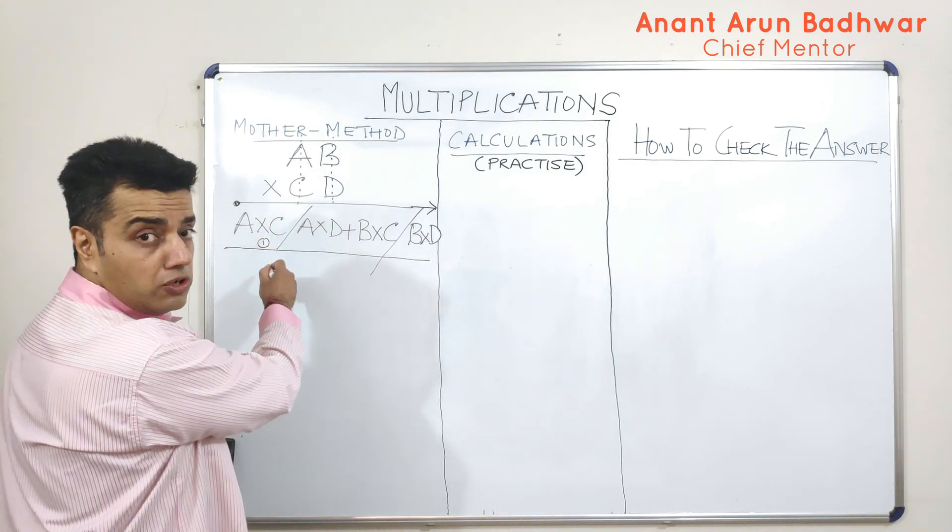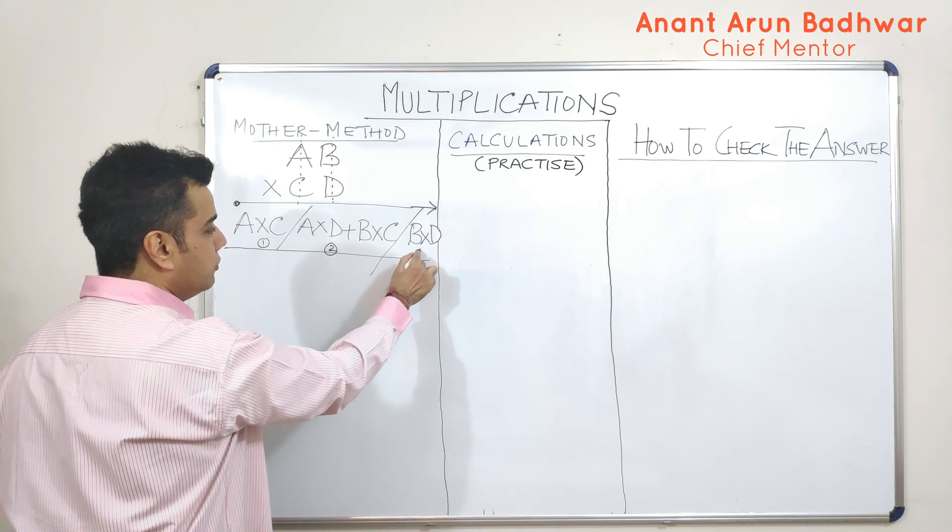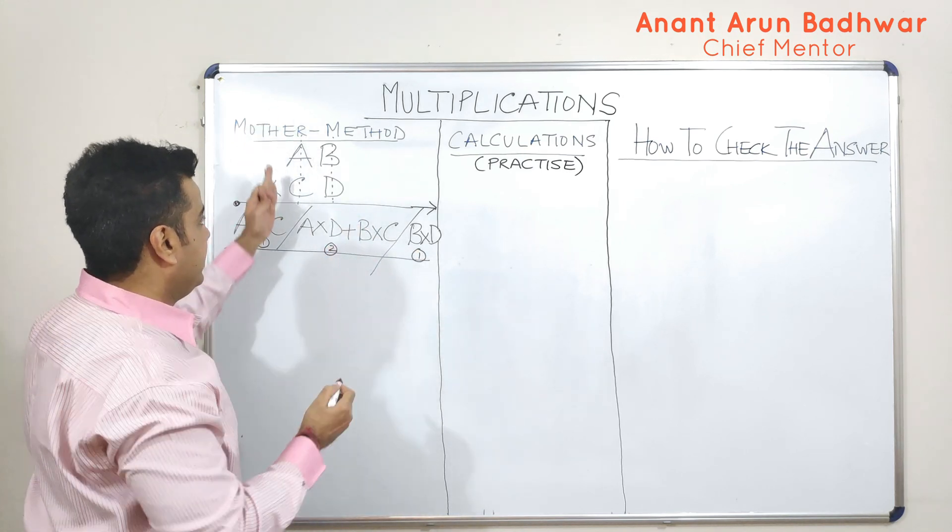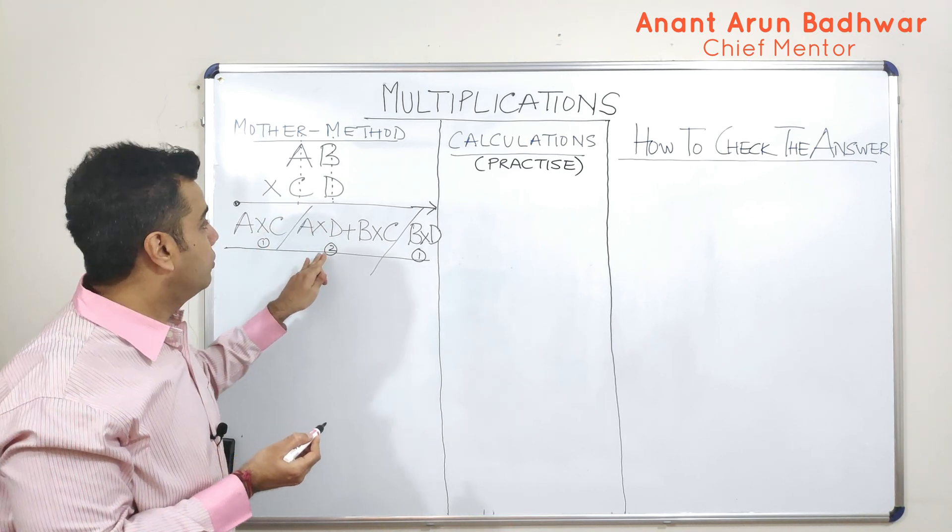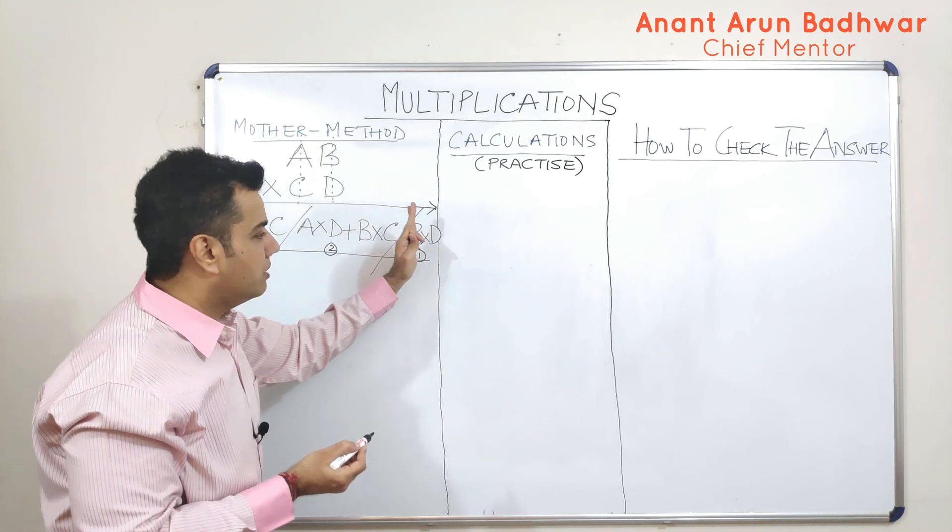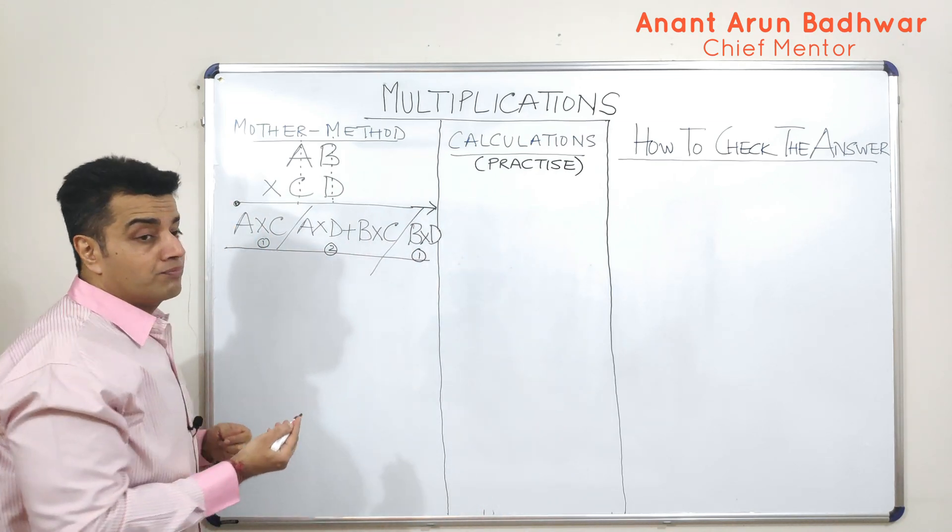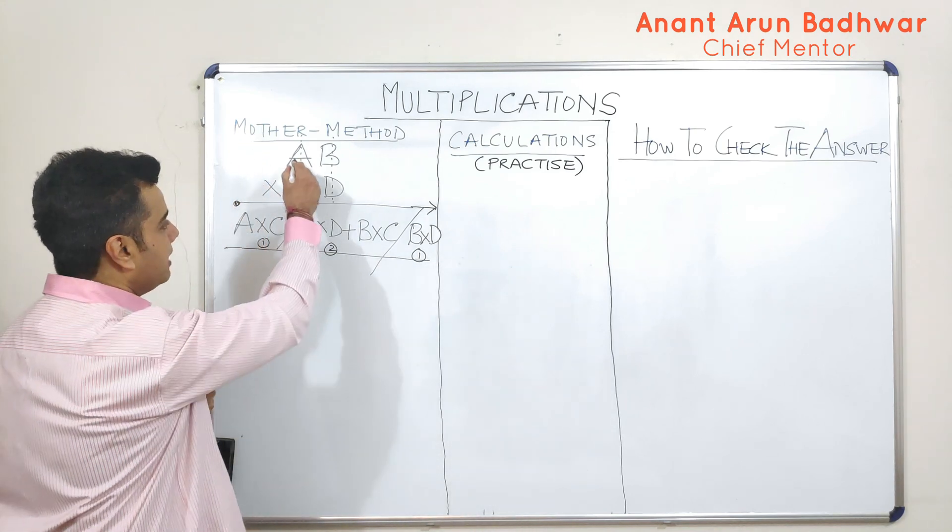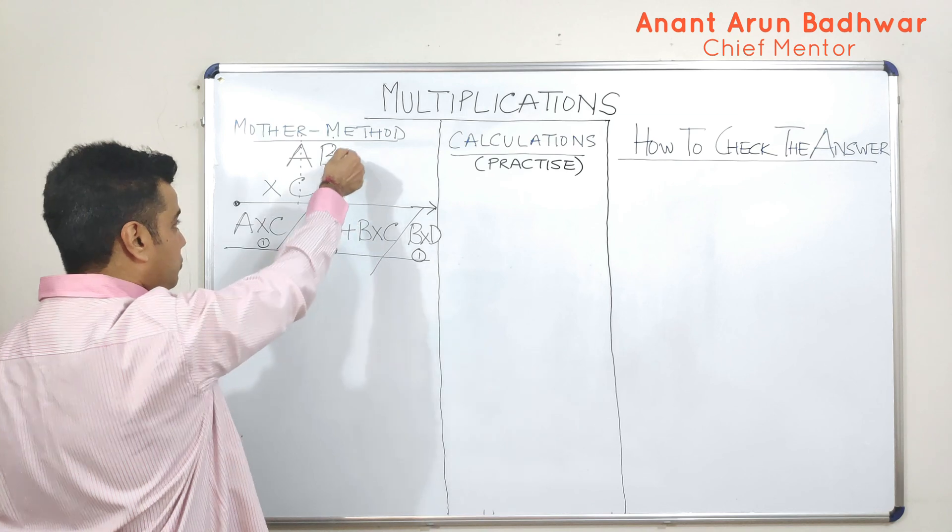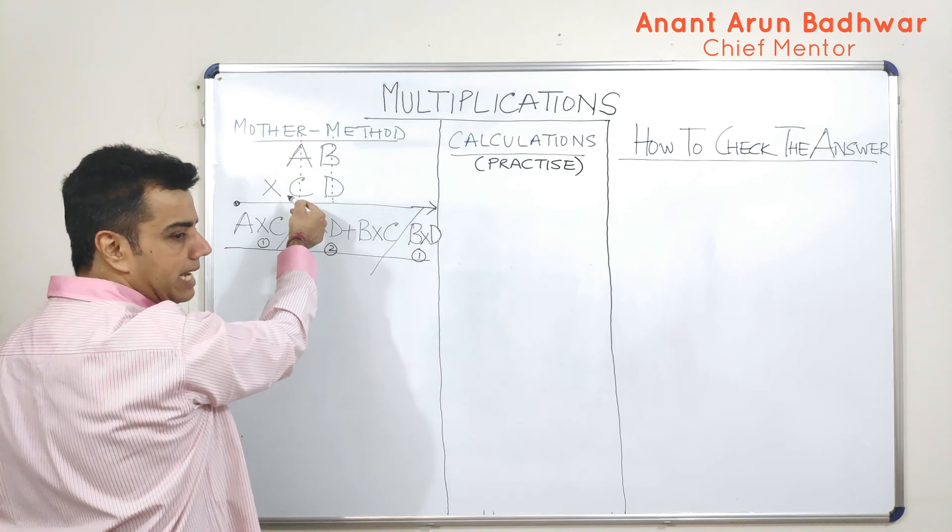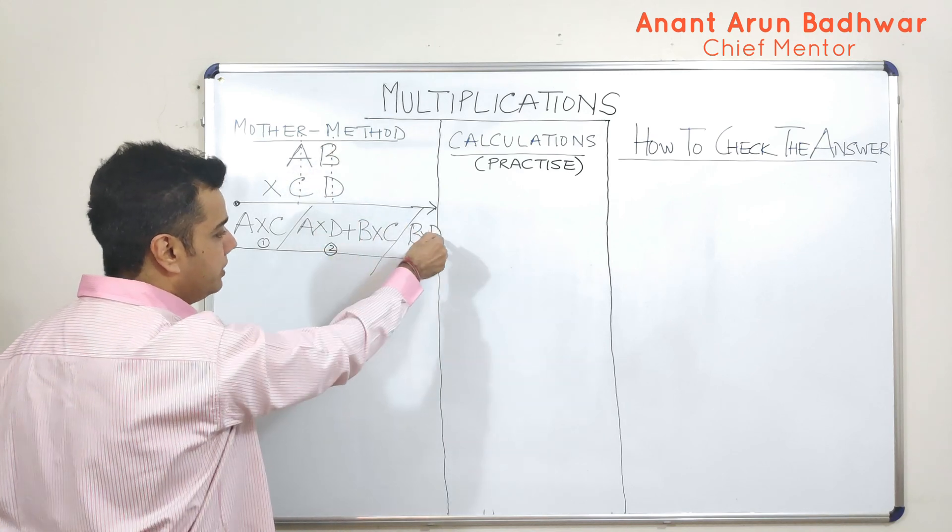So, let's do it. First, I'll take only one column. Then, I take both these columns and then I'm left with only one column. What am I supposed to do? I'm supposed to multiply. So, while I'm multiplying, this will be A into C. Here, you are supposed to multiply and then add. So, A into D plus B into C followed by B into D.